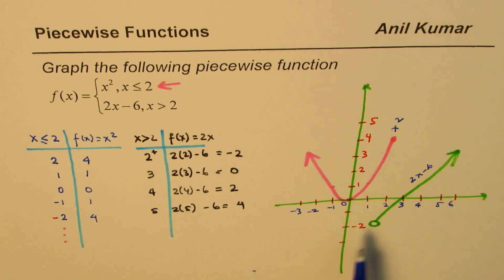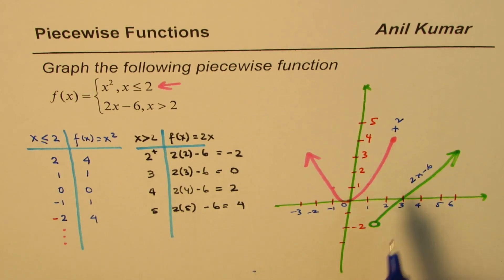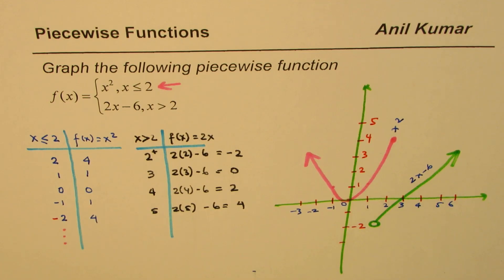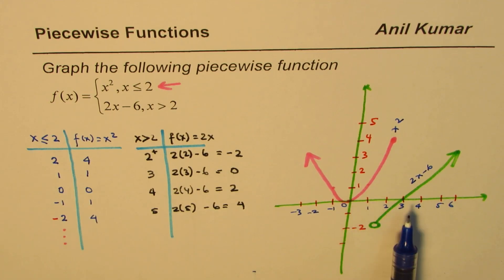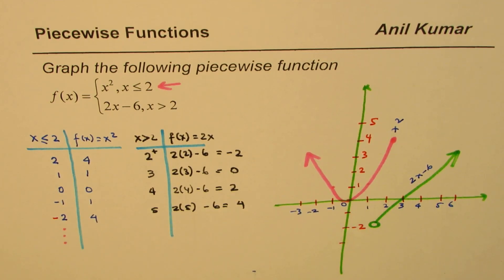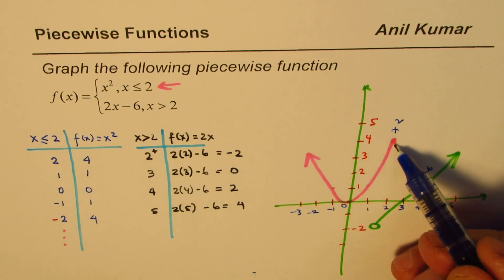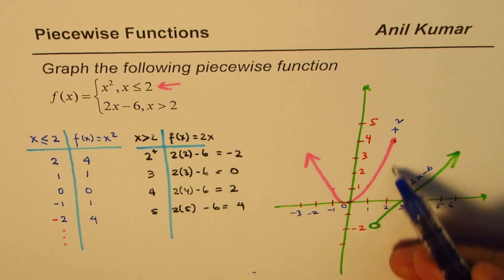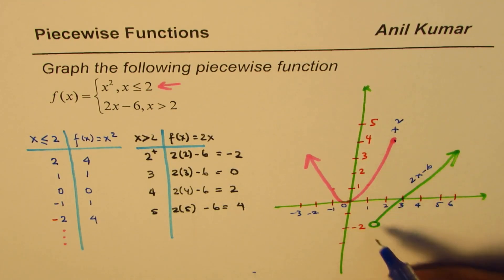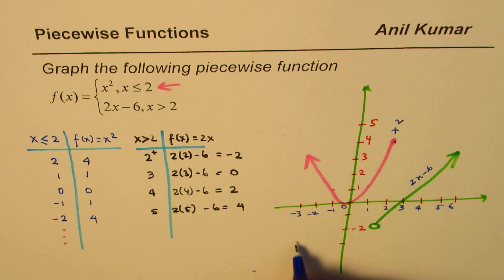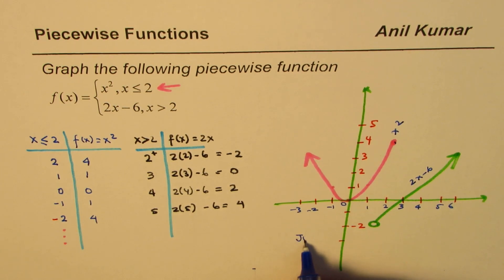So that becomes the complete graph — one piece is the parabola x squared, the other is the straight line 2x minus 6. What you observe here is a discontinuity, and this type is called jump discontinuity.